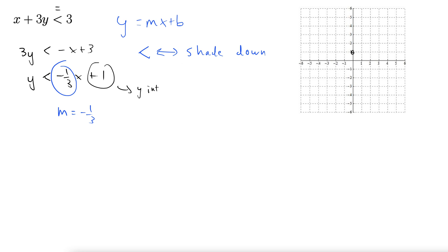The y-intercept is 1, and the slope is negative one-third. Remember that slope is rise over run. We can put this negative with either the rise or the run, so let's treat this as negative one over three.